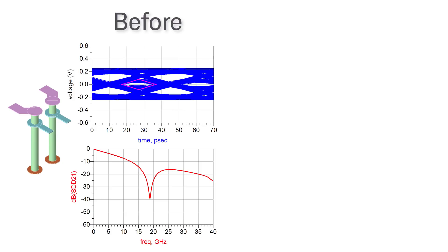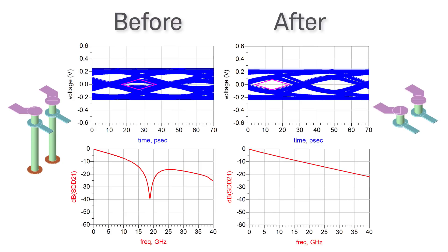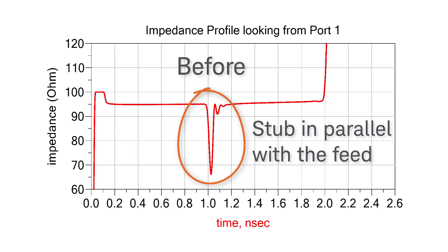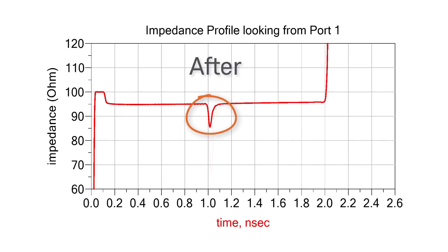Sure enough, after I went back to my design and removed the stubs, the stub resonance is no longer there and the eye opens. In TDR, since there is no longer a stub in parallel with the feed in the strip line layer, the impedance plot does not have a large low impedance anymore.